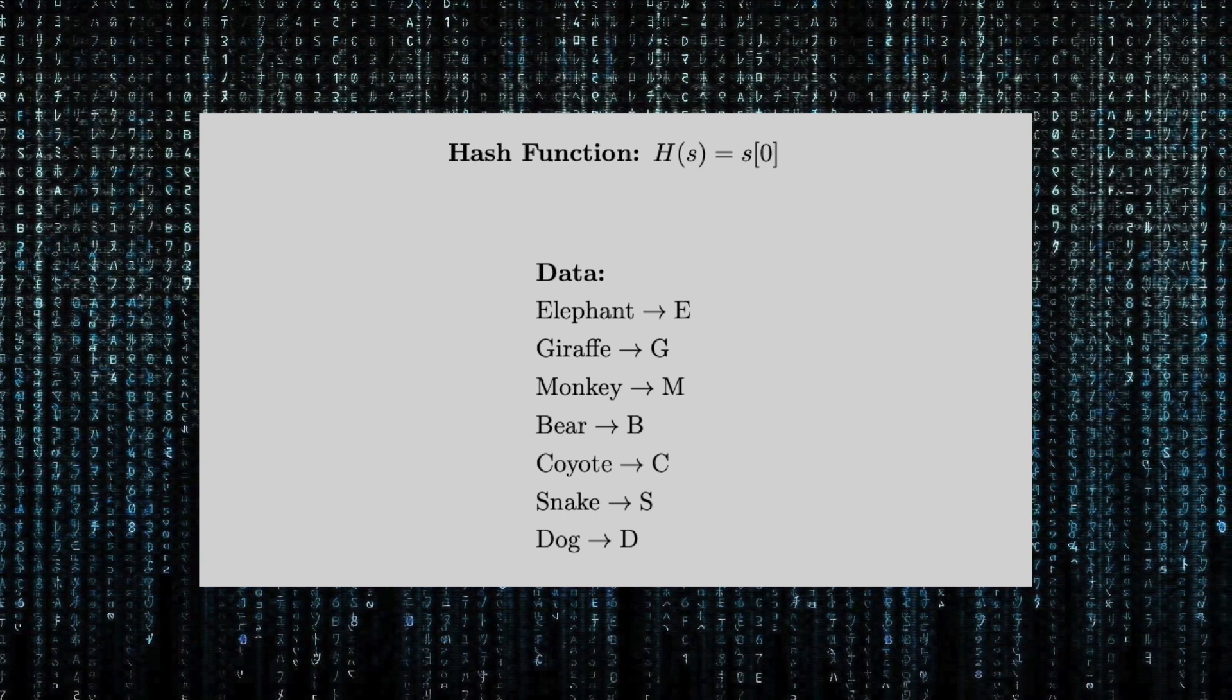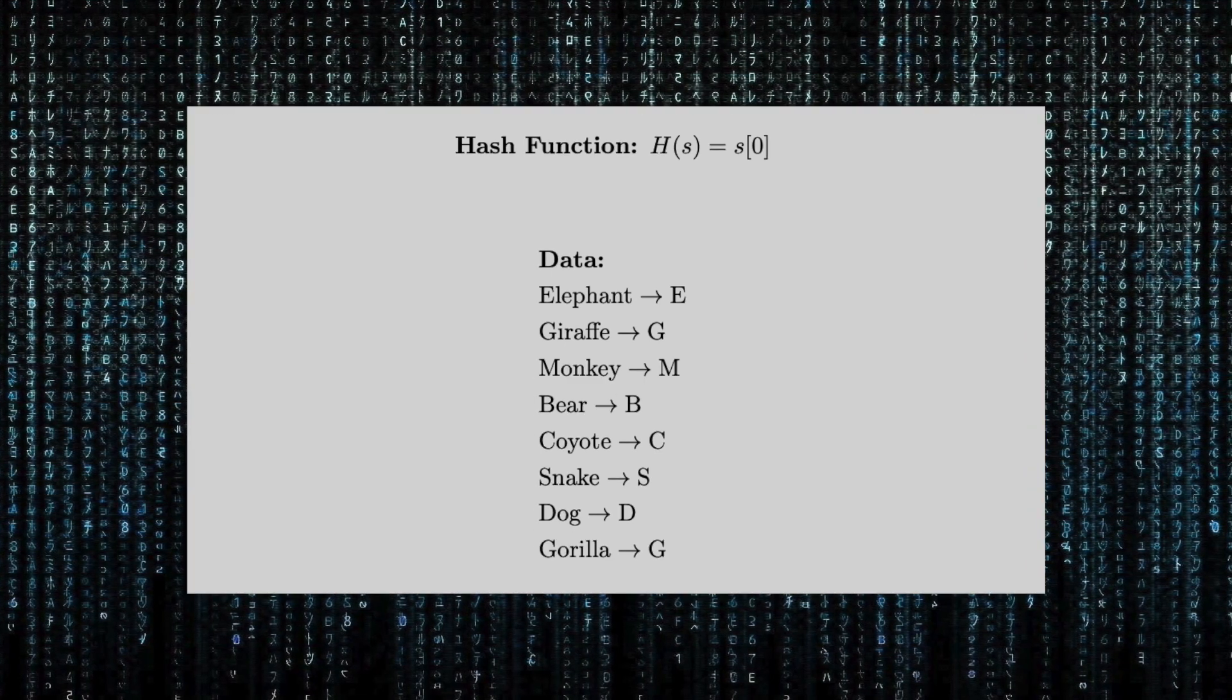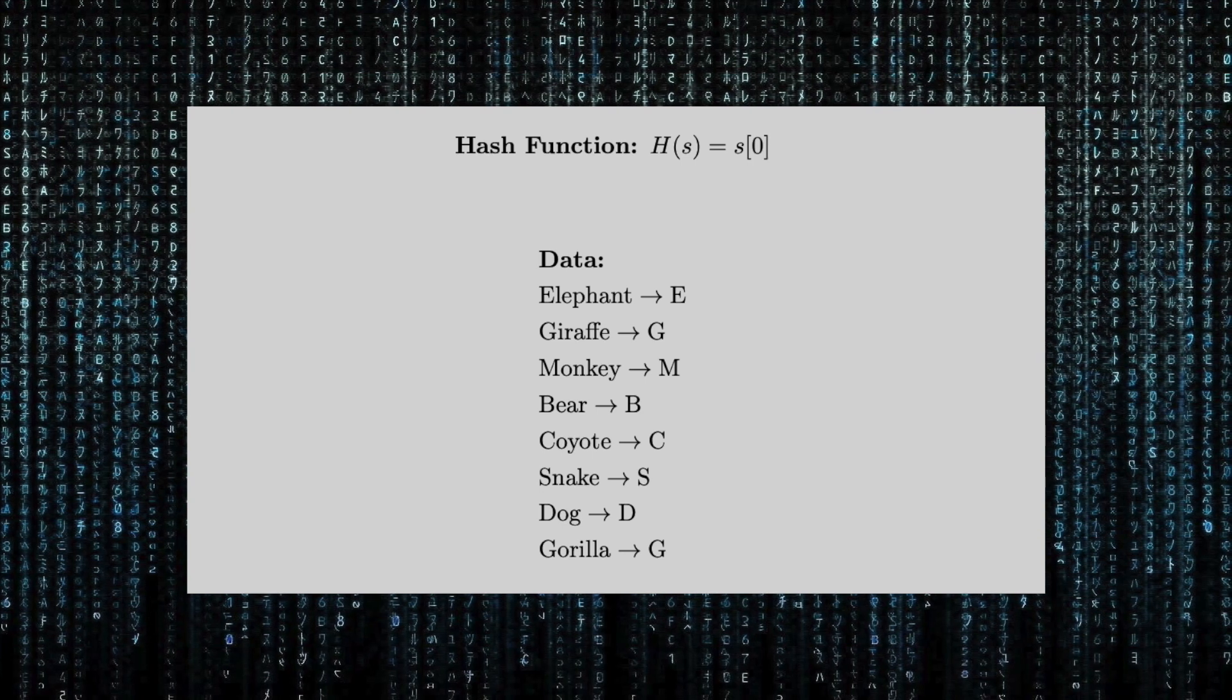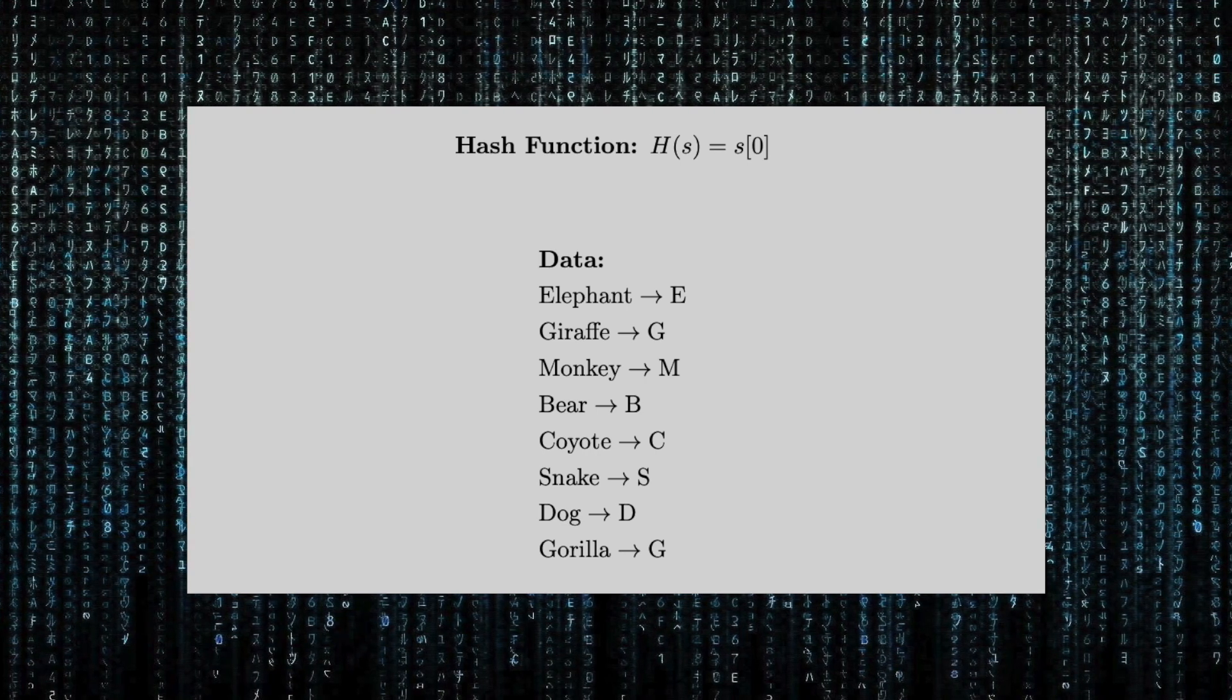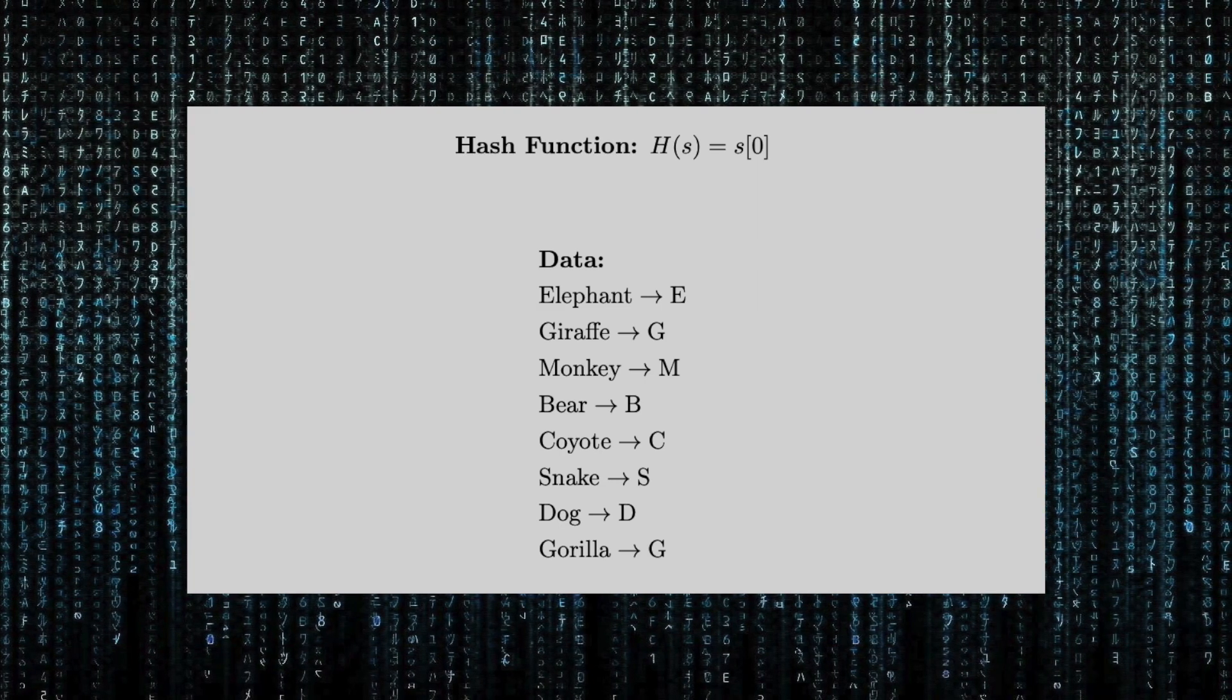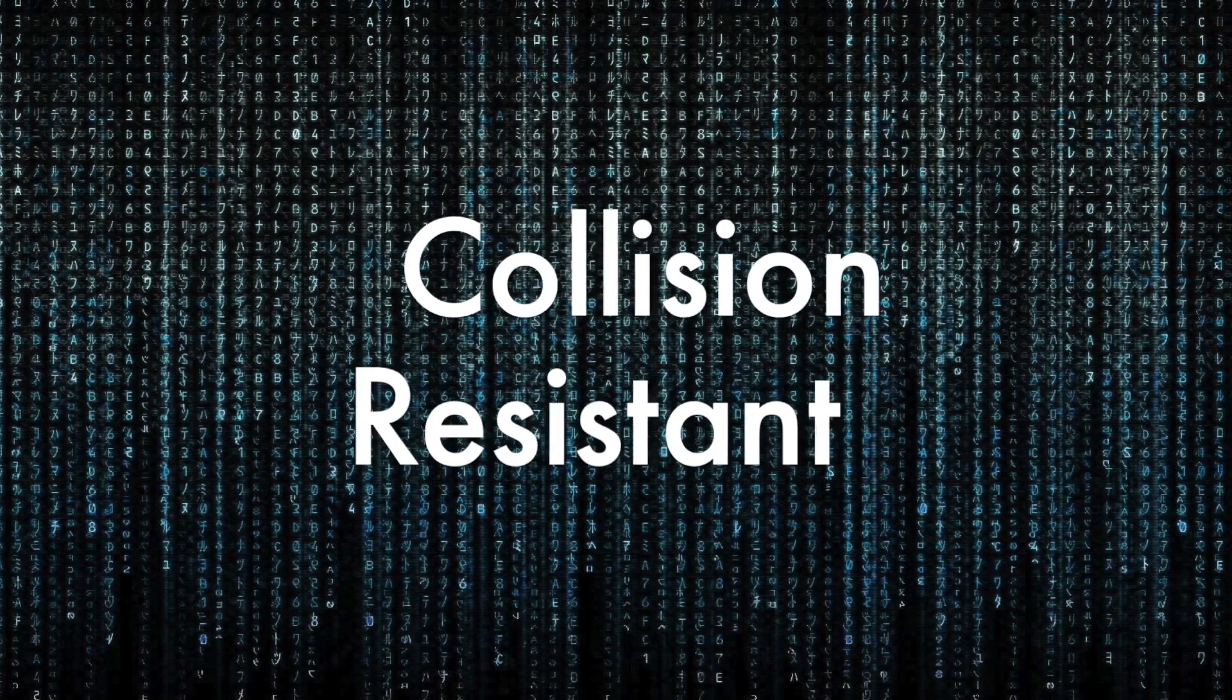However, I'm sure you can already tell that this hash will not work with too many names. When we include gorilla to this list, we now have what we call a collision. Two data points that the hash function results in the same hash key. Our hash keys would now contain g twice and we would have no way of knowing whether it meant gorilla or giraffe. This is why hashes must be collision resistant, making a collision impossible.